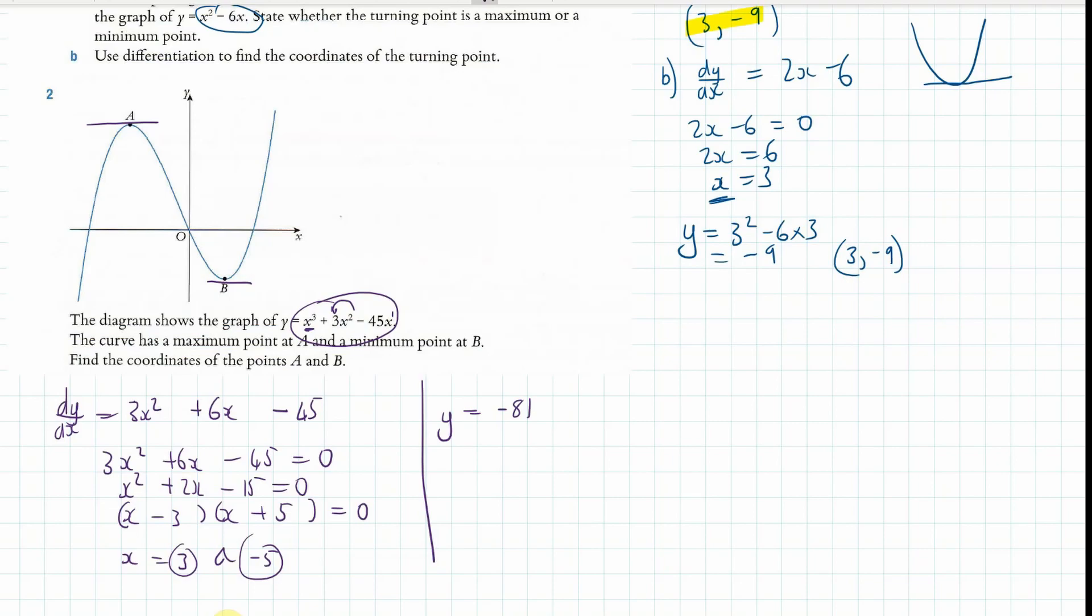And then the other value is if we chuck in the minus 5. So, we get minus 5, so that'd be minus 125, plus 3 times 25, minus 45 times negative 5. And I'm getting 175 there.